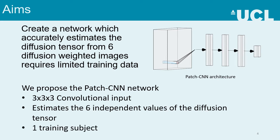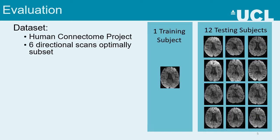The network will only require one subject to train on. Evaluation is performed using data from the Human Connectome Project. One image is used for training, whilst 12 others are used for testing.